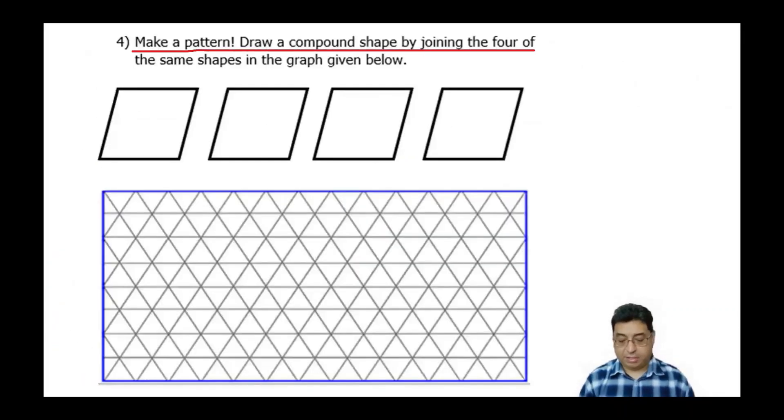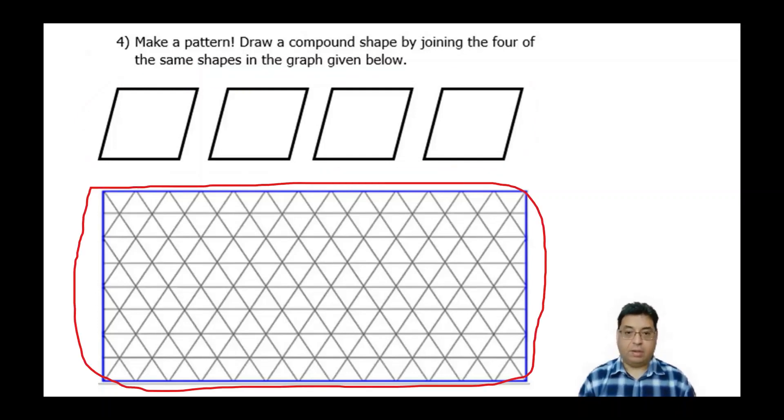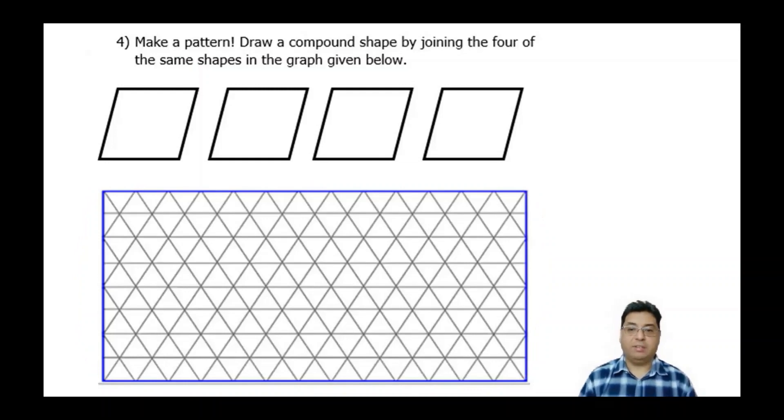For number four, it just says to make a pattern. Draw a compound shape by joining the four of the same shapes in the graph given below. So again, you need to read this carefully and follow what the directions are asking for. And if you don't do it right, it's going to be wrong. Let's check out the next one.